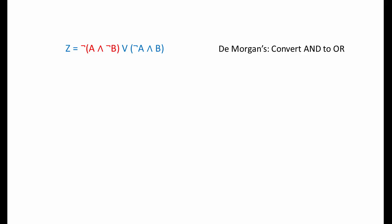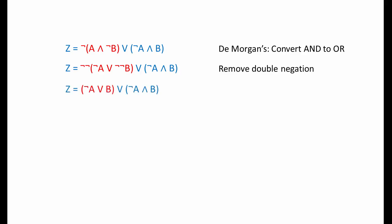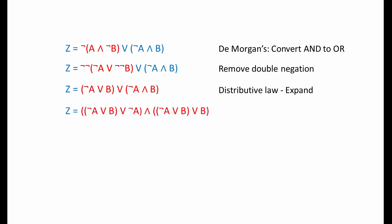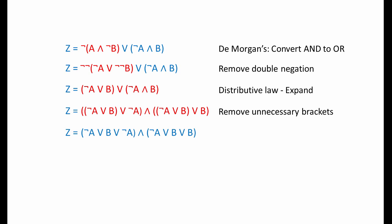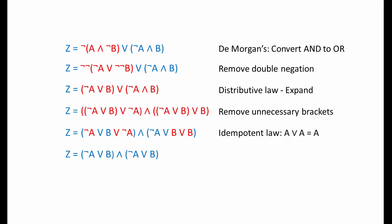Let's look at a solution for the second exercise. We're going to use De Morgan's to convert this AND operator into an OR. It's only applying to half of the expression this time. We NOT either side of the operator we've changed and negate the whole term. Remove any double negation. And now we're going to use the distributive law to expand this — treating the first term, NOT A OR B, as a single variable. Now we remove any unnecessary brackets. We can see a use for the idempotent law here, to get rid of one of the NOT A's and one of the B's. Finally, we can use the idempotent law again, because anything ANDed with itself is itself. We can chop this expression in half. And here's our result.